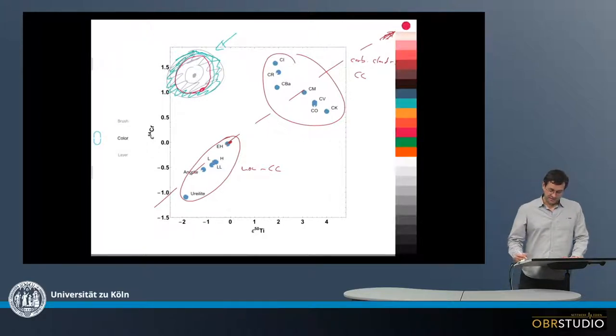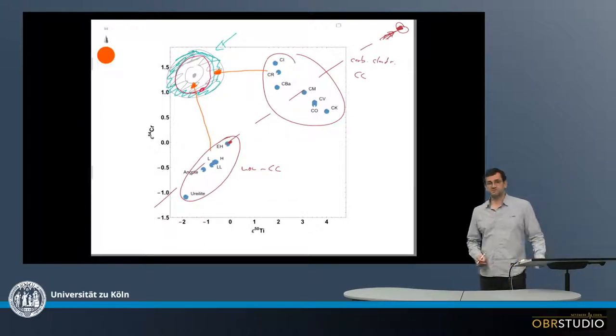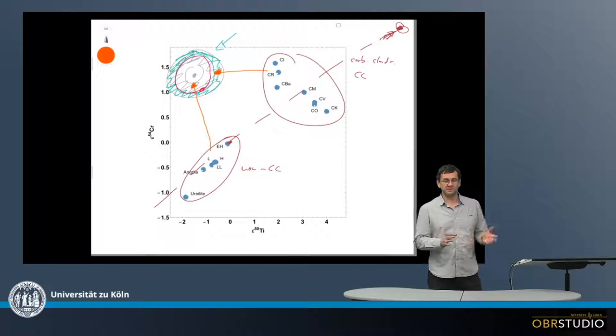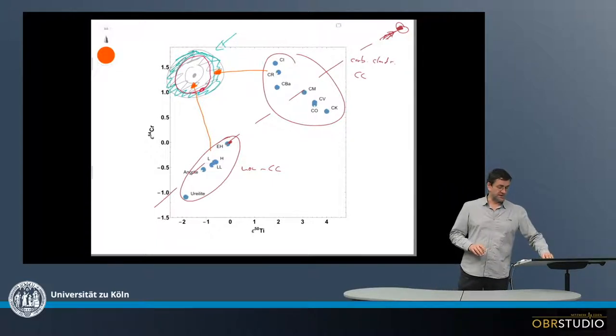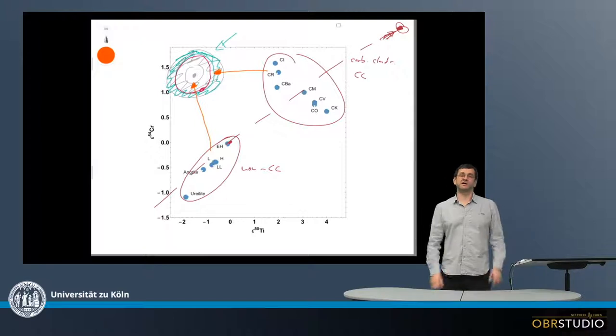And then, in this case, this would mean that basically the carbonaceous chondrites receiving some of these pre-solar grains form in the outer part of this protoplanetary disk, while the non-carbonaceous chondrites form in the inner part of the protoplanetary disk. And this is one of the possibilities to explain this kind of dichotomy or different isotope composition of these two groups of meteorites that we can identify in this plot depending on the isotope anomalies.